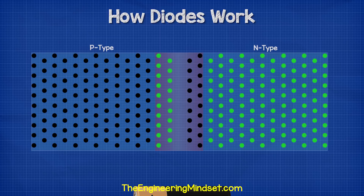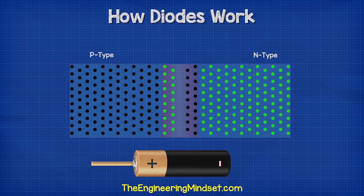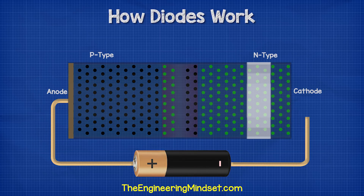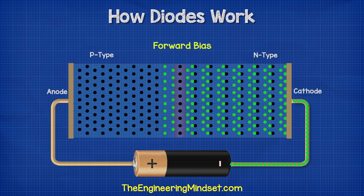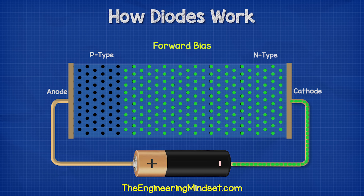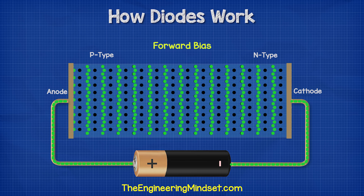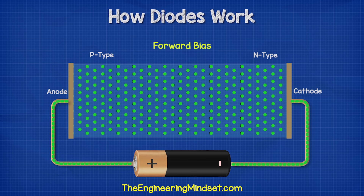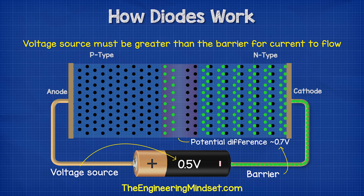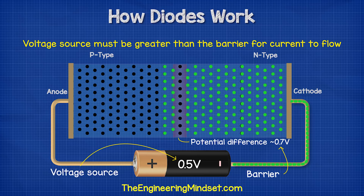When we connect a voltage source across the diode with the anode — the P-type — connected to the positive, and the cathode — the N-type — connected to the negative, this will create a forward bias and allow the current to flow. The voltage source has to be greater than the 0.7 volt barrier, otherwise the electrons can't make the jump.